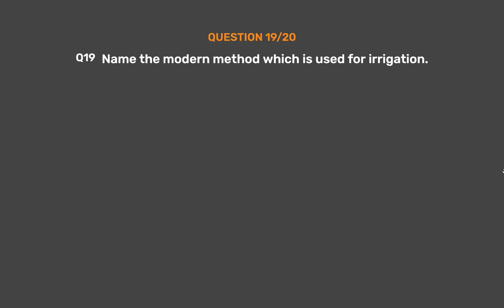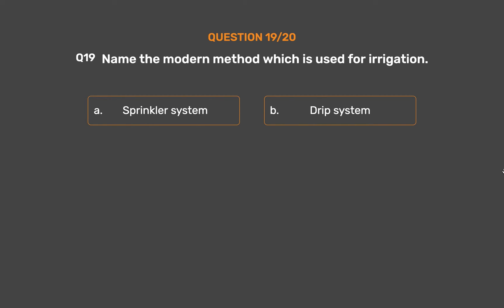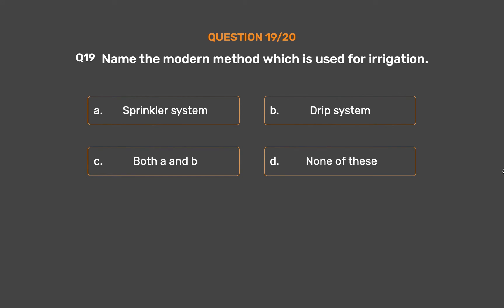Question No. 19: Name the modern method which is used for irrigation. Option A: Sprinkler system. Option B: Drip system. Option C: Both A and B. Option D: None of these.